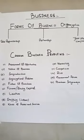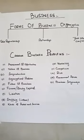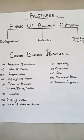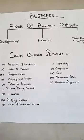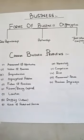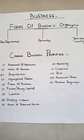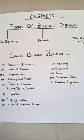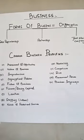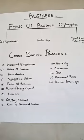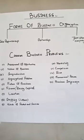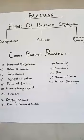For example, the businessman may choose sole proprietorship, partnership, or company. His decision is totally dependent upon the availability of capital which he has.